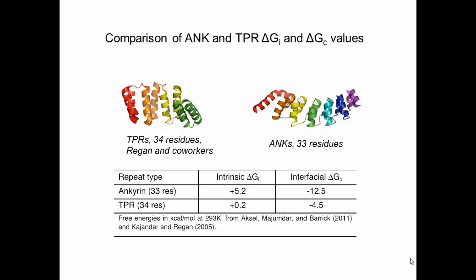For ankyrin repeats, we find that each of the units is very intrinsically unstable — a 5.2 kilocalories per mole energy cost for folding — but that the interactions between the repeats are interfacially very stable. The interfaces have 12.5 kcal per mole cohesion between them.